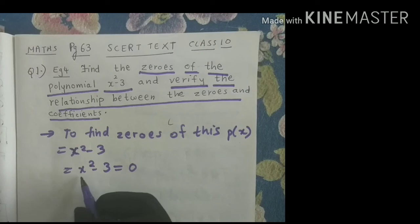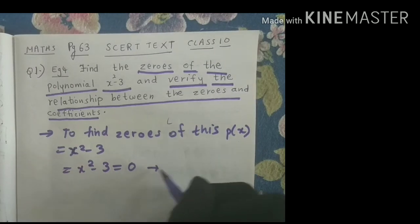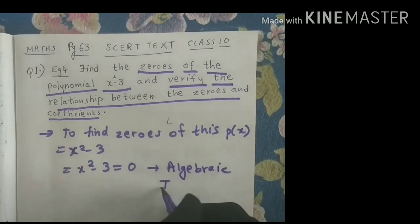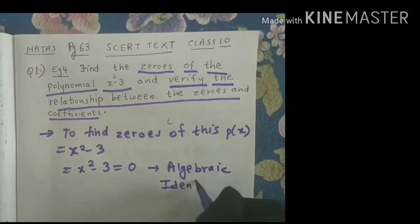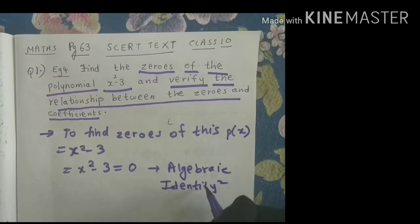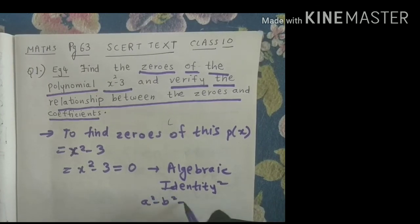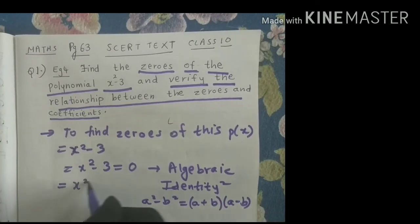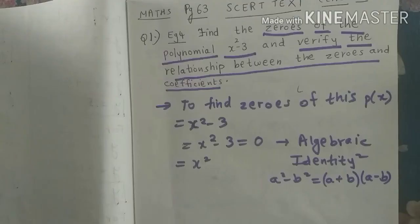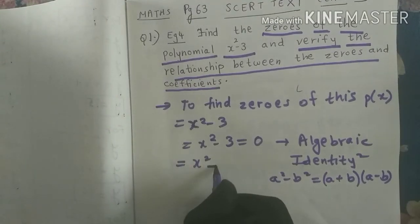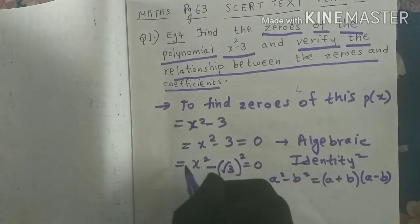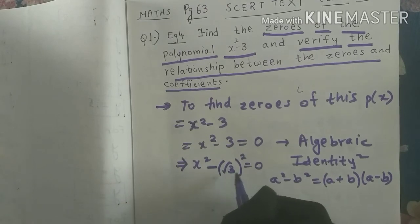Now what can I observe? This equation is of the algebraic identity a squared minus b squared, which equals a plus b into a minus b. So how can I write x squared minus 3? As x squared minus root 3 whole square, equals 0.